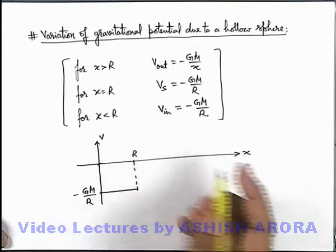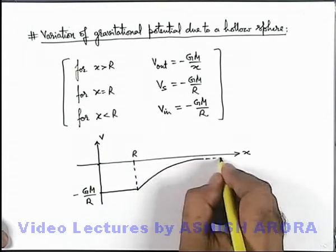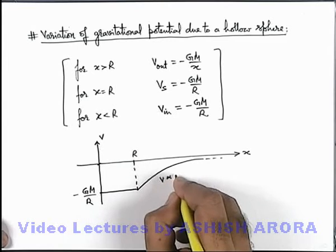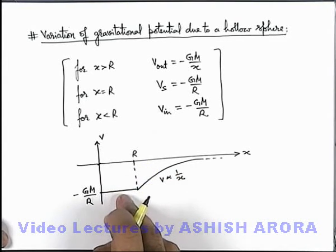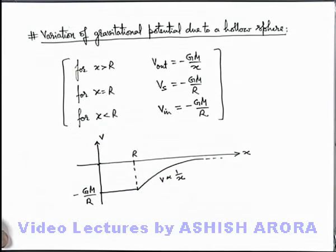And outside we can say it is inversely proportional to x. So finally we can say it drops in magnitude, and here we can write potential is inversely proportional to x. The graph is plotted below the x region because everywhere the value of potential is negative.